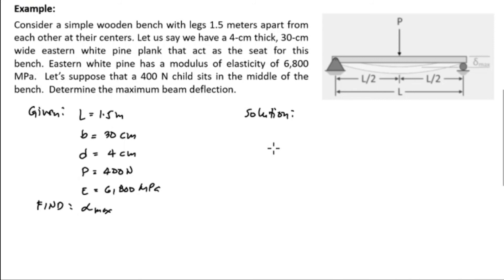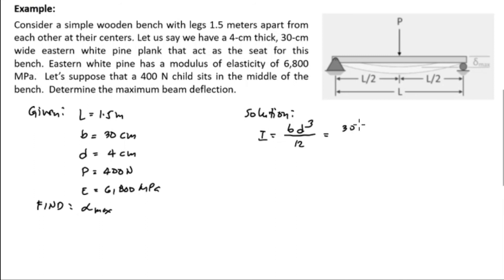Solution: First, determine the moment of inertia I. Since we are using a rectangular plank with base b and depth d, the formula for moment of inertia is I = bd³/12. Substituting b = 30 cm and d = 4 cm, then dividing by 12, the value for I is 160 cm⁴.